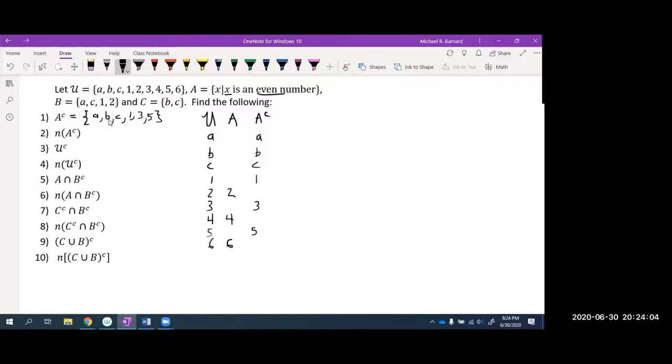Now, question two looks almost identical, but the key difference is that we put a set inside the counting function, and so your answer should be a number. One, two, three, four, five, six. There are six elements outside of A.